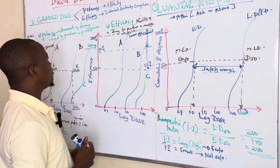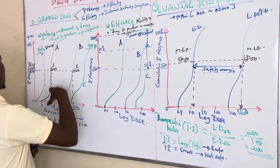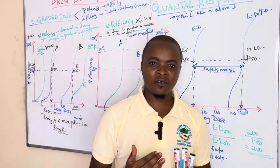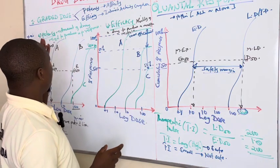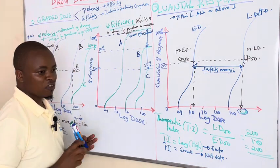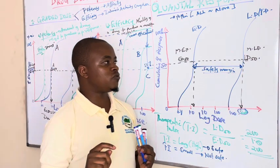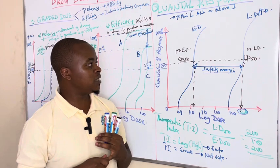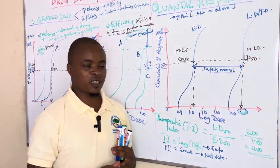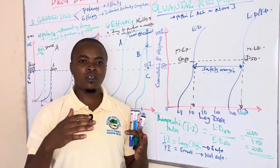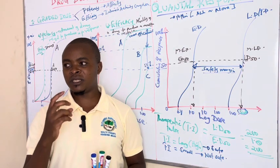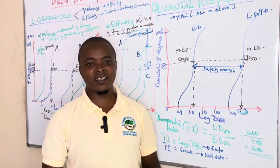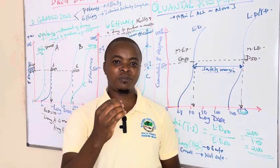Thank you for following along. In this video we have discussed the graded dose-response curve and the quantal response curve. Graded dose-response curves are used to determine the potency and efficacy of a drug. Quantal response curves are used to determine the ED50, the LD50, the therapeutic index, and the therapeutic window. Thank you for listening — hope you enjoyed this video.